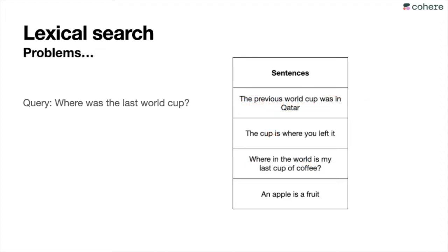Imagine that the dataset of sentences are these ones: 'The previous World Cup was in Qatar,' 'The cup is where you left it,' 'Where in the world is my last cup of coffee,' and 'An apple is a fruit.' If you do lexical search and compare the number of words in common with the query, you get four, three, five, and zero. So 'Where in the world is my last cup of coffee' wins — even though it's not the answer and doesn't even have much to do with the query, it just has a lot of words in common. So counting words in common is not the ideal way to search.